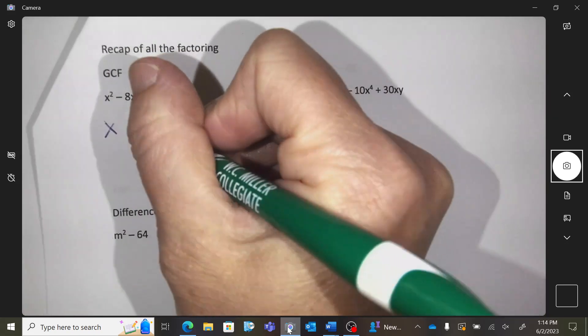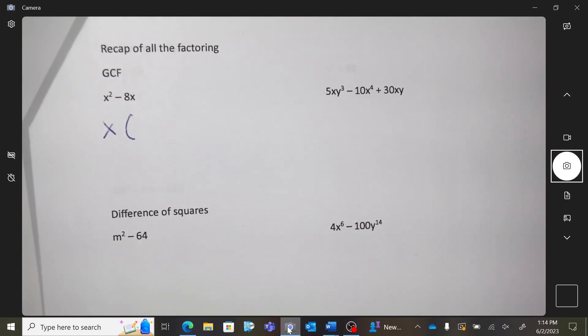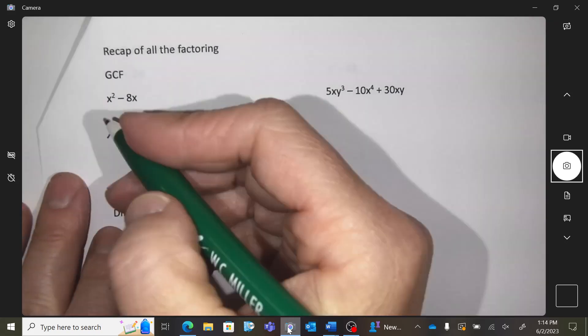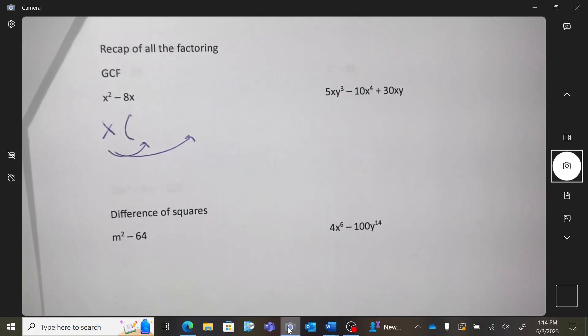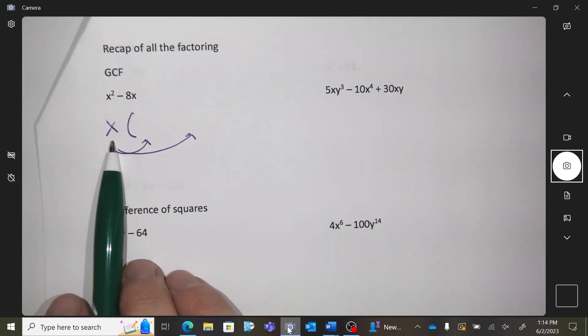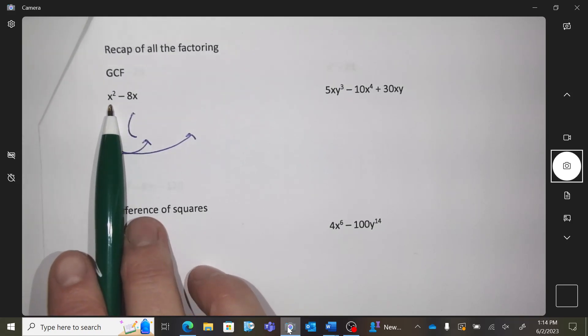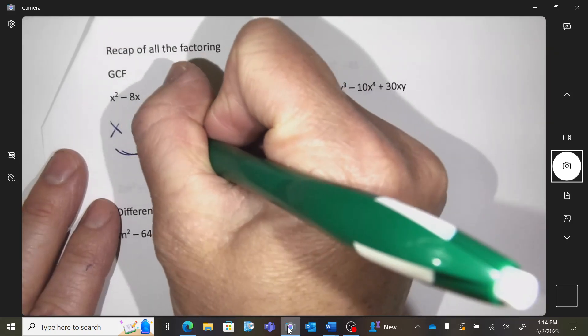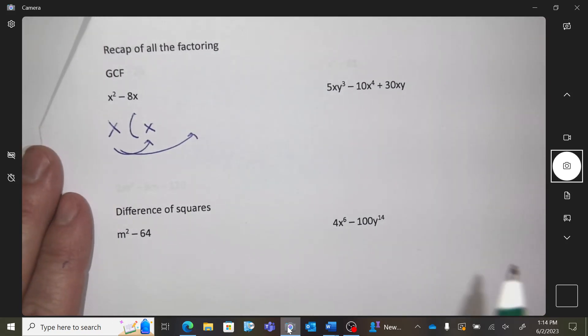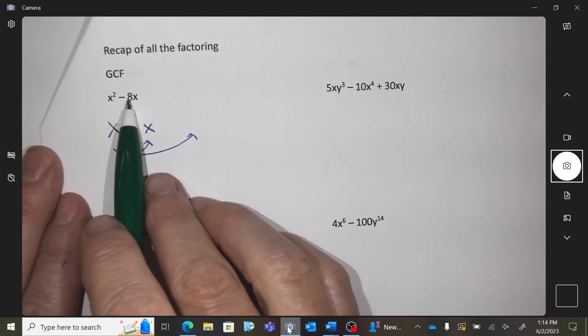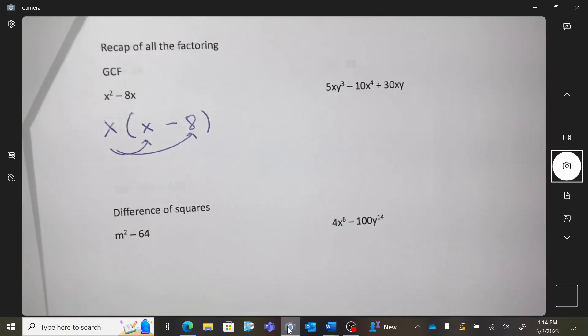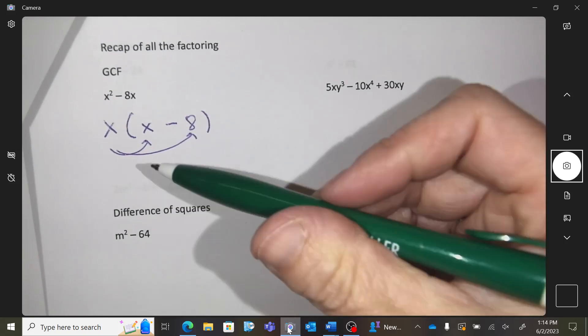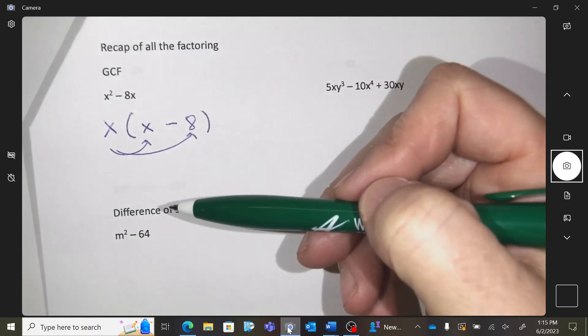Then I'm going to do a bracket. So there's two terms, so I'm going to need two things inside the brackets yet. So x times what would produce x squared? X. X times what would produce subtract 8x? 8. There it is. You can always multiply it because it will get back to here. Factoring and multiplying are the opposite operations.